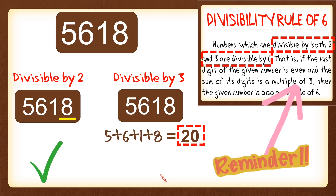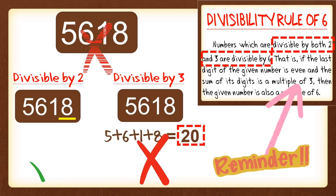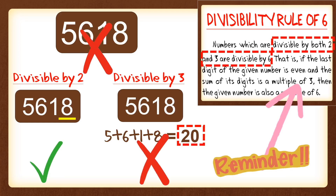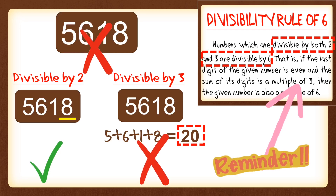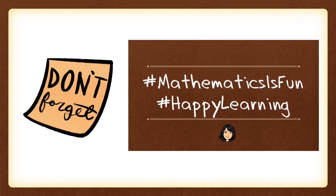Since 5,618 passed the divisibility check for 2 but failed for 3, that means 5,618 is not divisible by 6, because it should be divisible by both 2 and 3. As a reminder, for the divisibility rule of 6, the number must be divisible by both 2 and 3 to determine that it is also divisible by 6. Happy learning, because math is fun!